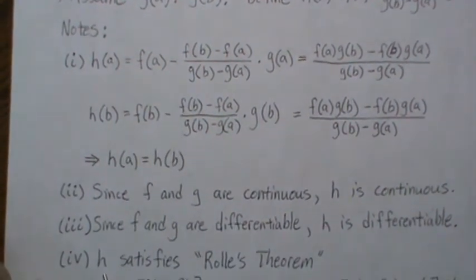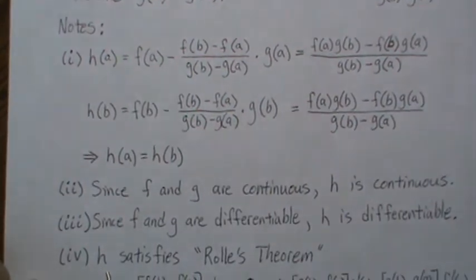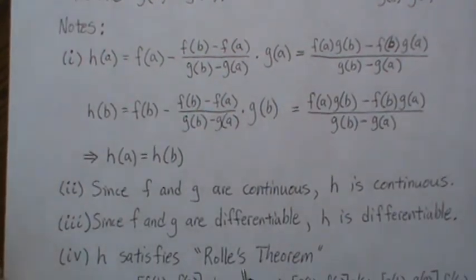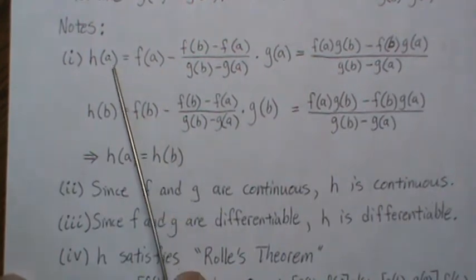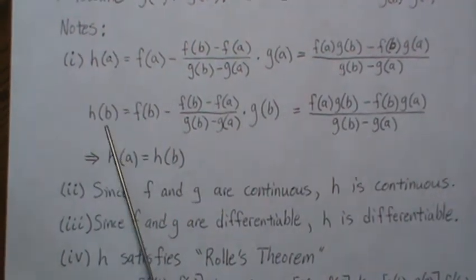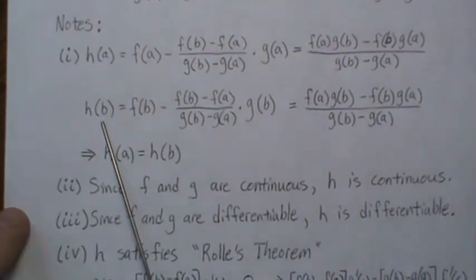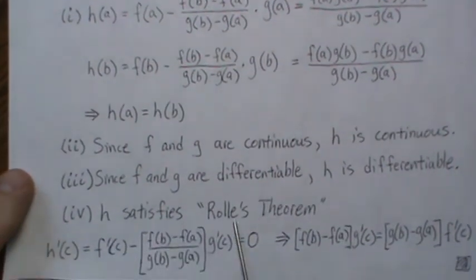So now the first three notes imply that h satisfies Rolle's Theorem. That means there exists a c in the interval (a,b) such that the derivative of h is zero. That's Rolle's Theorem, and I have a video out called Rolle's Theorem.